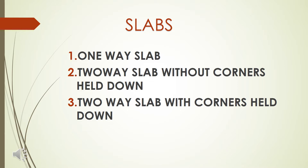We will discuss the one-way slab. Two-way slab is available in two divisions. The subcategories: if the L by B ratio is greater than 2, it is a one-way slab. If less than or equal to 2, it falls into the two-way slab category. We will attend to two-way slab: the first is two-way slab without corners held down, and the second is two-way slab with corners held down.